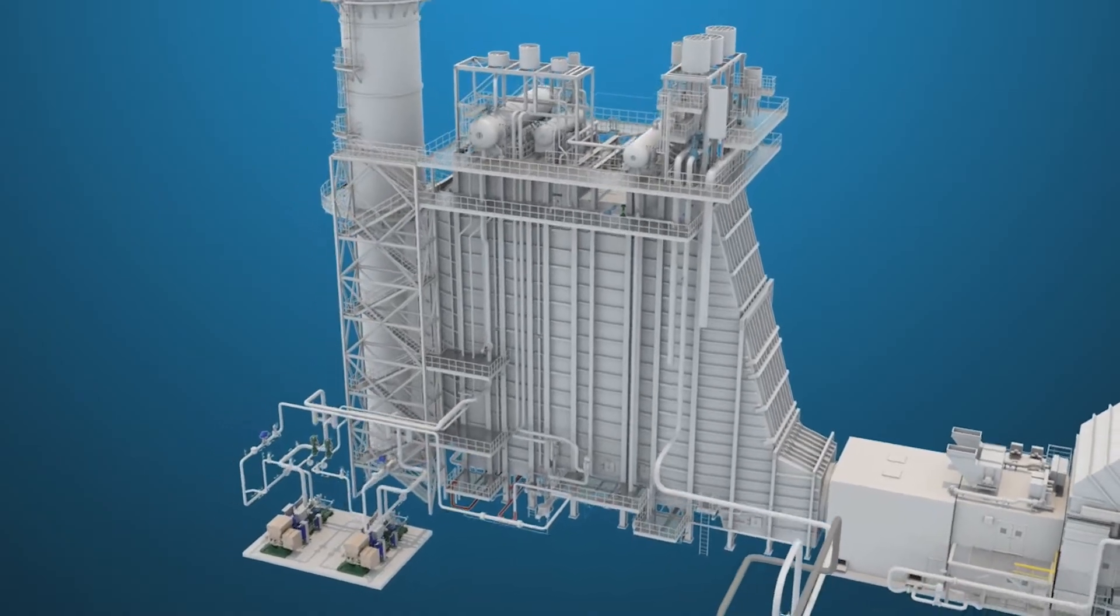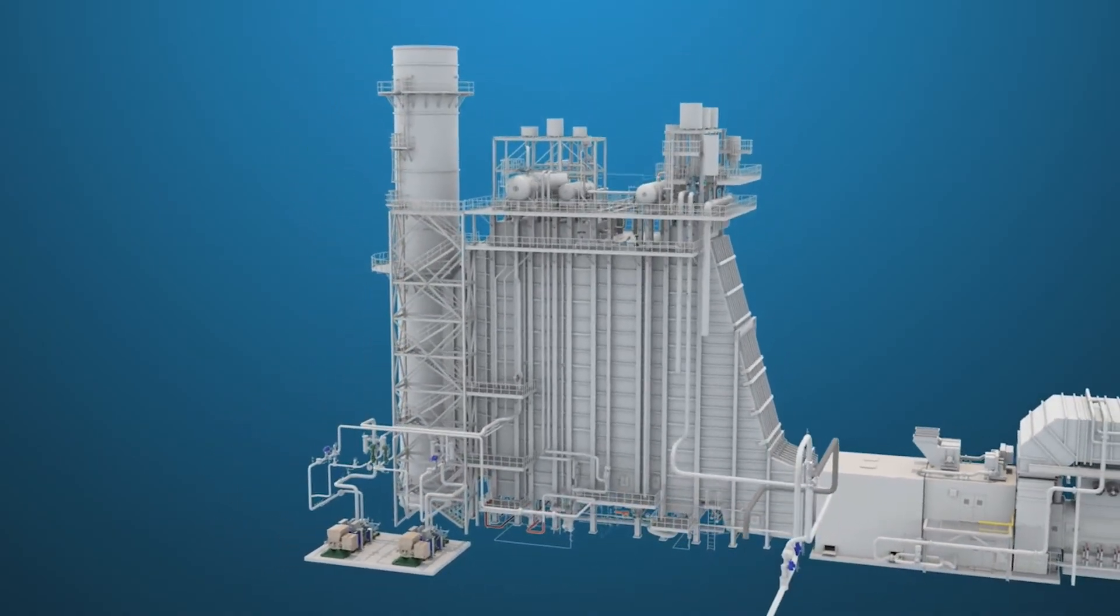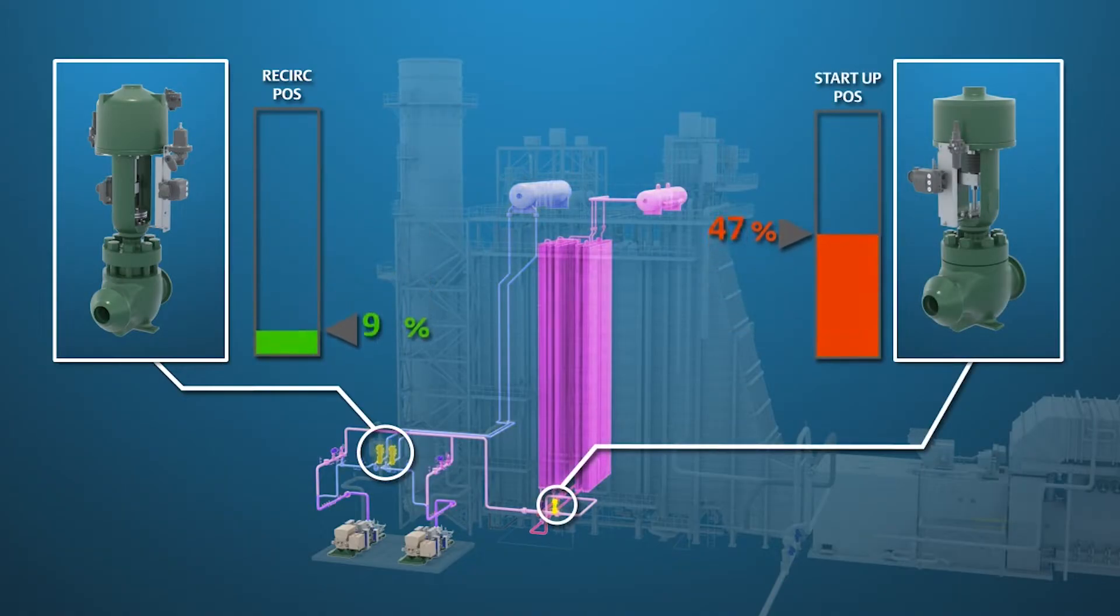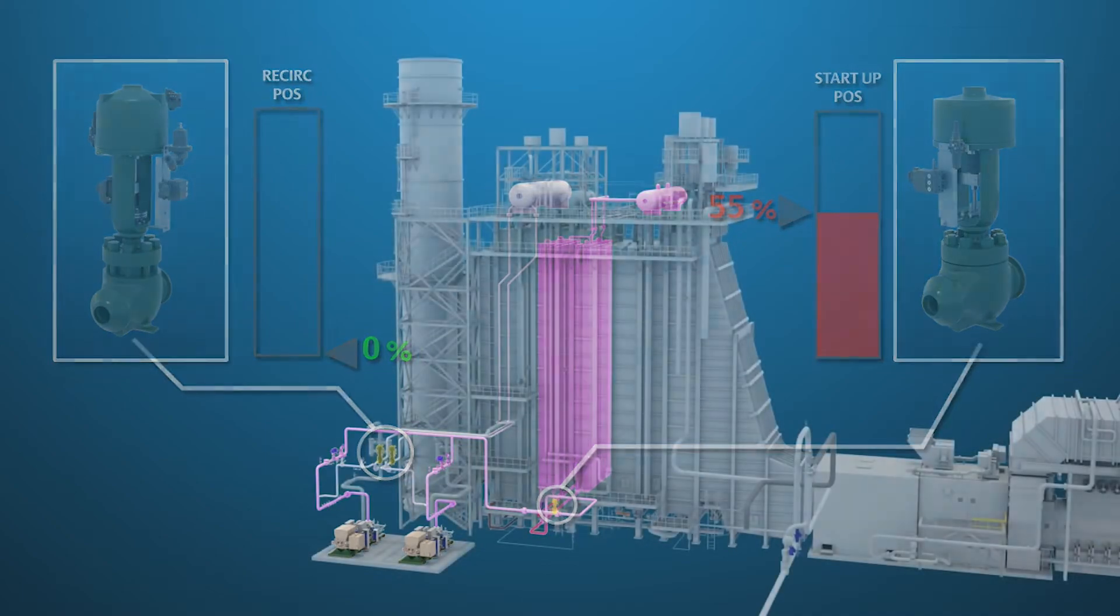If total flow is less than 30% of boiler feed water pump capacity, the recirculation valve will close proportionally as the startup valve is opened to maintain the minimum flow rate through the pump, which is the combined value of recirculation flow plus feed water flow.